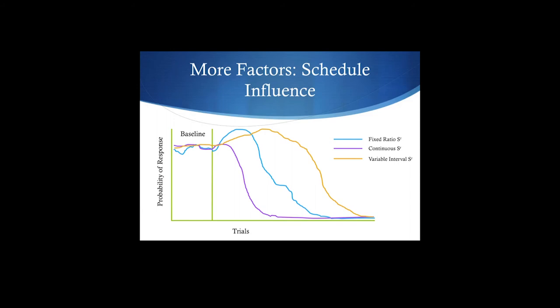So now when you start extinction, they're not going to realize that they're no longer going to get reinforced. Why? Because their behavior wasn't reinforced every single time. So it takes a while for an organism or person to realize that they're on extinction if their behavior has been on intermittent reinforcement in the past.